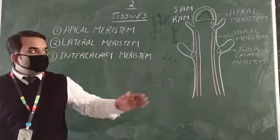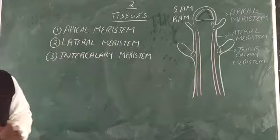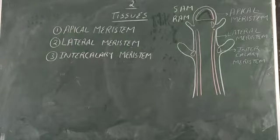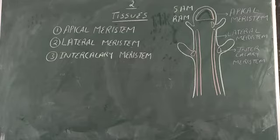As you can see, it is going from top to the bottom. It is present on the lateral side of the plant and along the sides of the central axis of the plant, and it gives rise to vascular tissue.